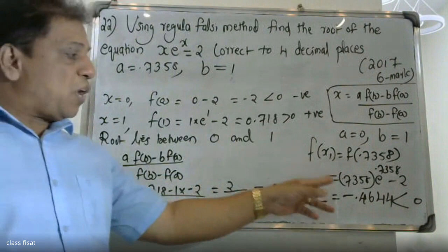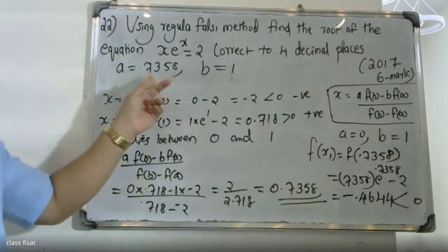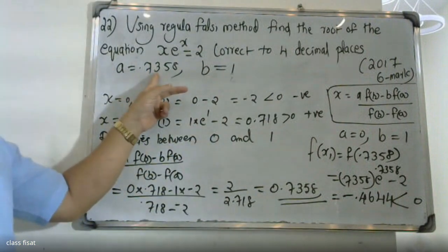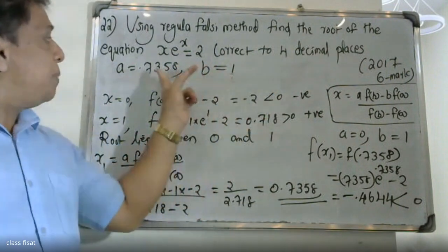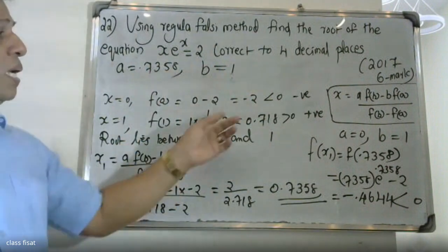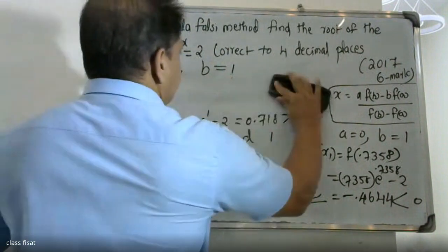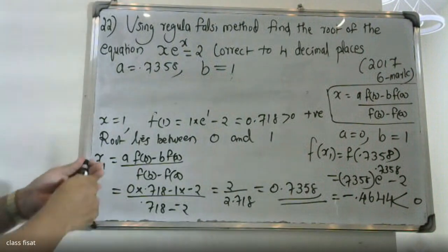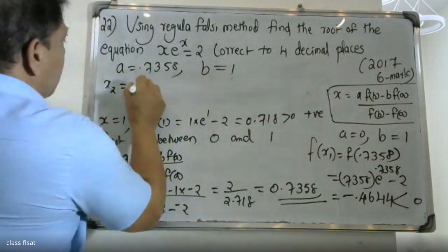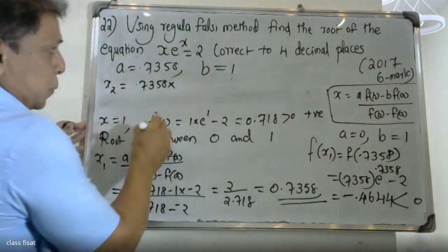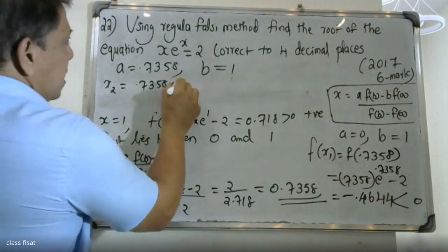Since f(X1) is negative or positive, we update the bracket. A becomes the new mark. We now have A = 0.7358 and f(B) = 0.718 for the next iteration.